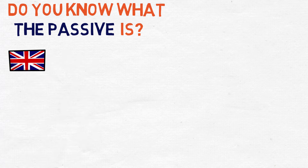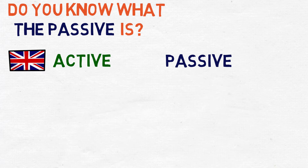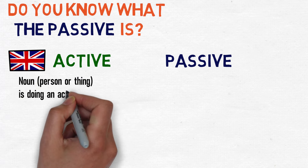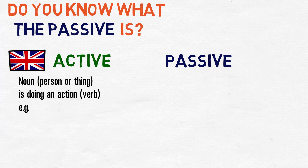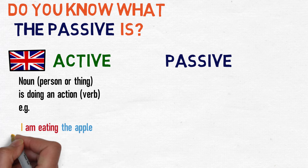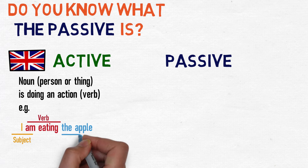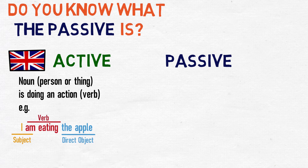In English, we have two types of sentence that use what we call a voice. These are active and passive. An active sentence is where a noun — i.e. a person or a thing — is doing an action, i.e. a verb. For example: I am eating the apple. 'I' is the subject of the sentence and the verb is 'am eating.' The direct object — the thing affected by the verb in this case — is the apple.